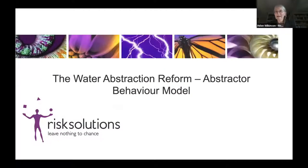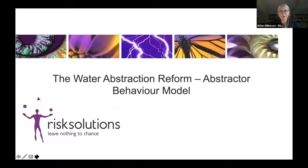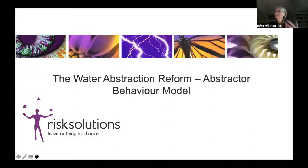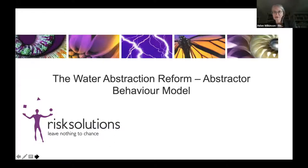Thanks very much Henry. And thanks to Brian, who's going to be driving my slides for me due to a problem with computers at this end. Henry asked me to say a few words about an agent-based model that we put together for DEFRA and the Environment Agency a few years ago, looking at water abstraction reform. The reason this model was commissioned was because with climate change and increases in population, it was becoming clear that the system regulating how much water abstractors can take from rivers and aquifers across the country was becoming increasingly less fit for purpose. The aim of the agent-based modelling was to explore what reform might look like and what was the best way to reform the system.